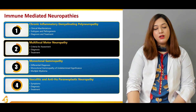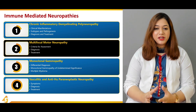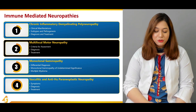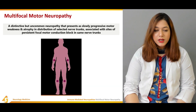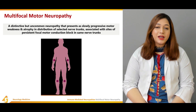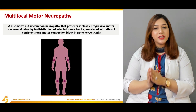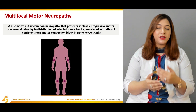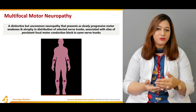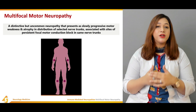In this section, we will discuss the criteria of assessment, the diagnostic criteria of multifocal motor neuropathy, and the treatment options available. Multifocal motor neuropathy is defined as a distinctive but uncommon neuropathy that presents as slowly progressive motor weakness and atrophy in the distribution of selected nerve trunks — mainly the ventral roots, which are responsible for providing motor control — associated with sites of persistent focal motor conduction block in the same nerve trunks.